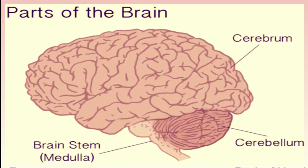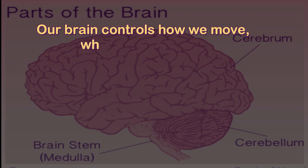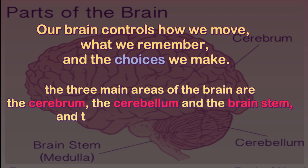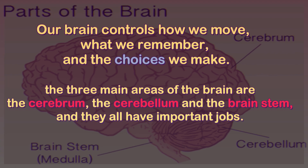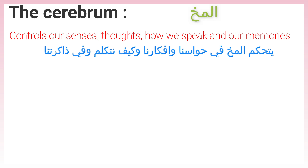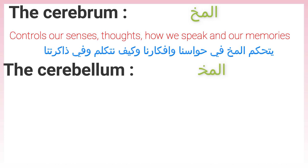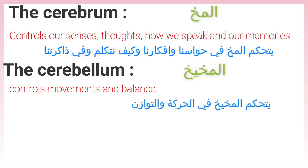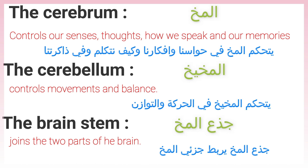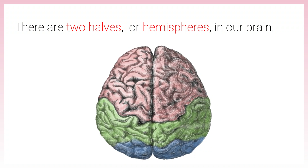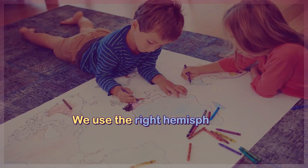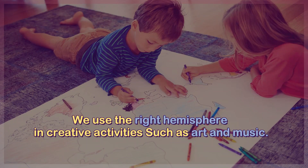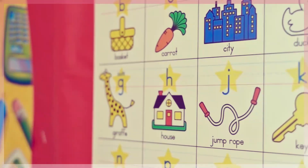Now we will talk about the brain. Did you know? Our brain controls how we move, what we remember, and the choices we make. The three main areas of the brain are the cerebrum, the cerebellum, and the brain stem, and they all have important jobs. The cerebrum controls our senses, thoughts, how we speak, and our memories. The cerebellum controls movements and balance. The brain stem joins the two parts of the brain. Did you know? There are two halves, or hemispheres, in our brain. The left hemisphere is important for math, science, and solving problems. We use the right hemisphere in creative activities such as art and music.